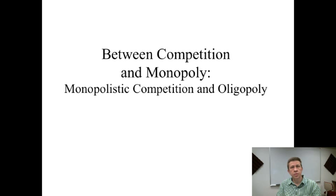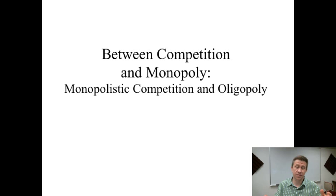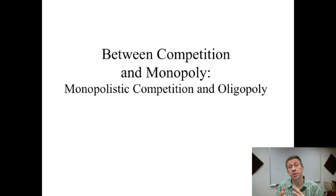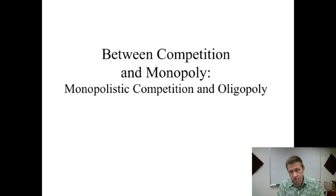Welcome to our next lesson. By now we have covered perfectly competitive markets and monopolies. Those two markets are very much what we think of as the extremes. Perfect competition makes some assumptions that are often a little bit unreasonable — that there are so many firms all selling exactly the same thing, with perfect information and easy market entry and exit — so there aren't really many markets that are perfectly competitive. There are a lot that have many of the traits, so it is useful to study, but it's pretty extreme.